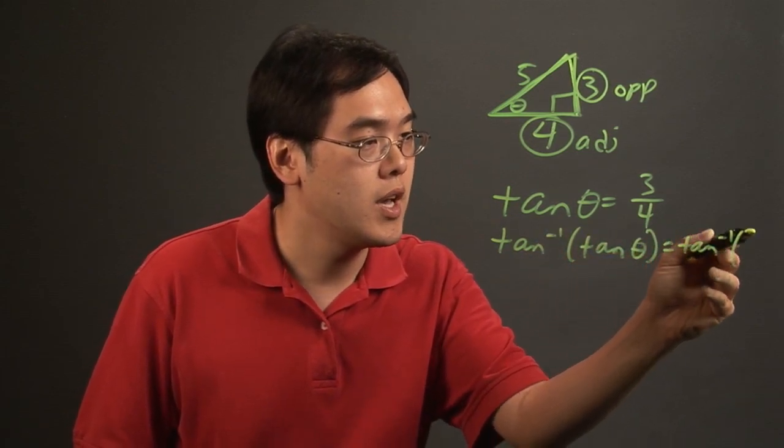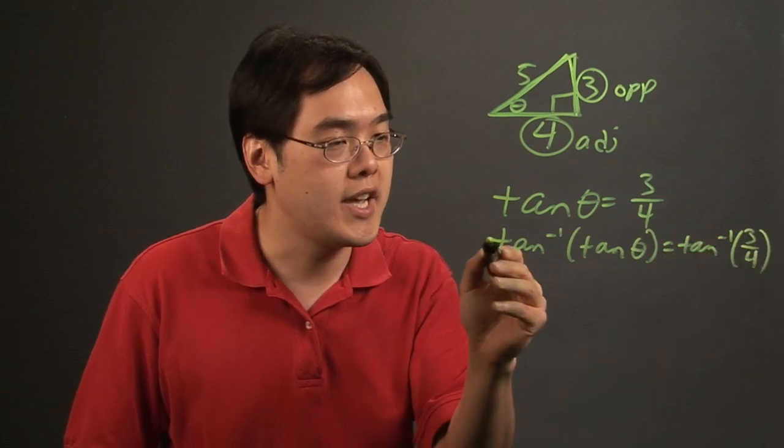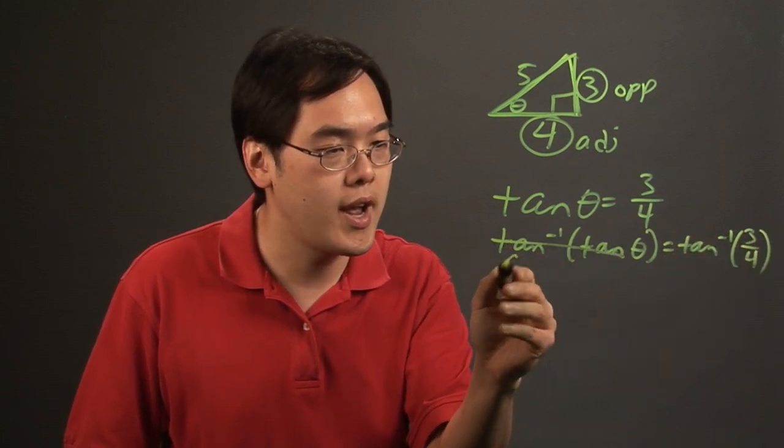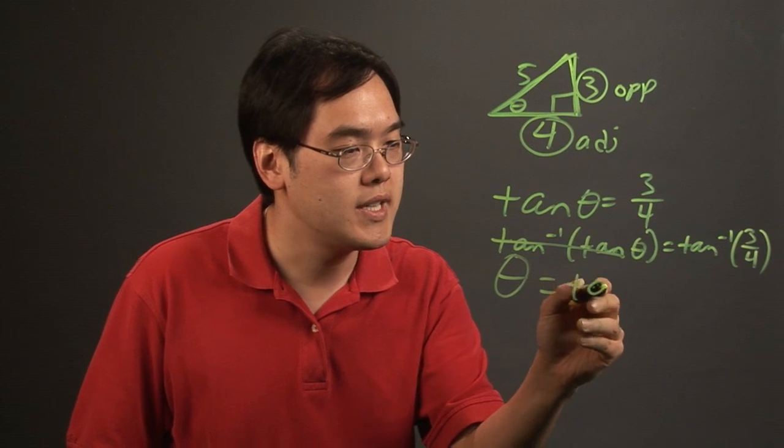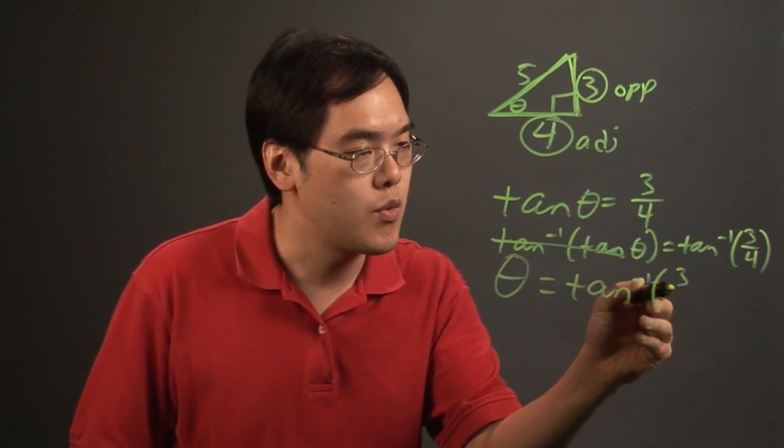So you have tangent inverse of 3 fourths. The tangent inverse and tangent cancel each other out, so you have theta equals tan inverse of three-quarters.